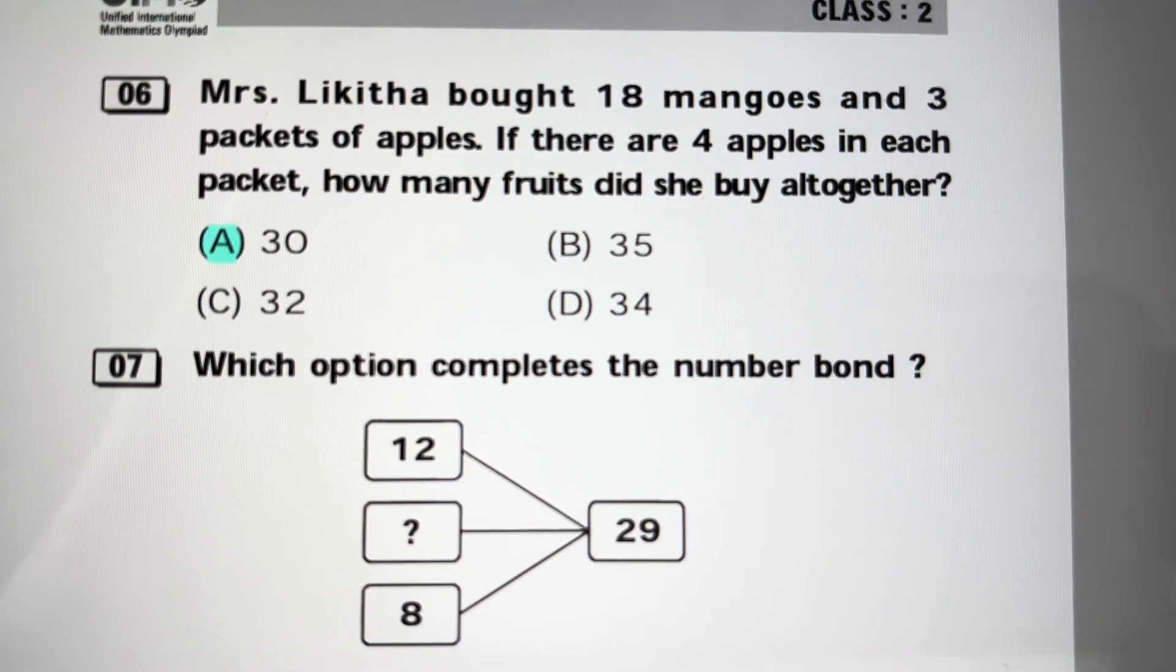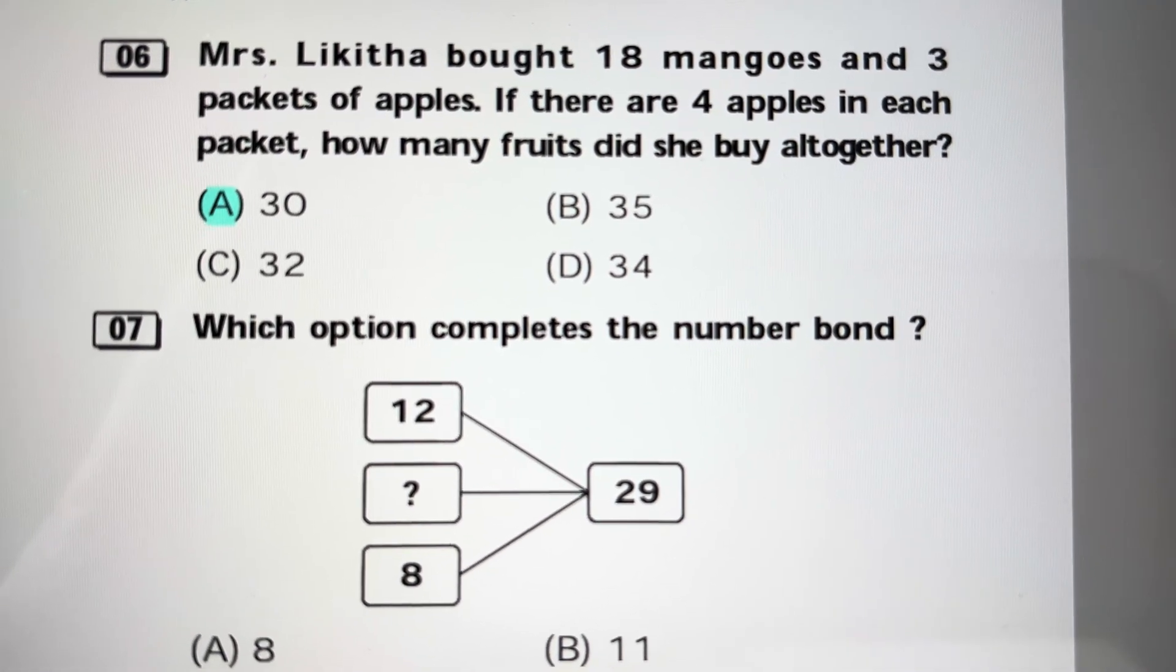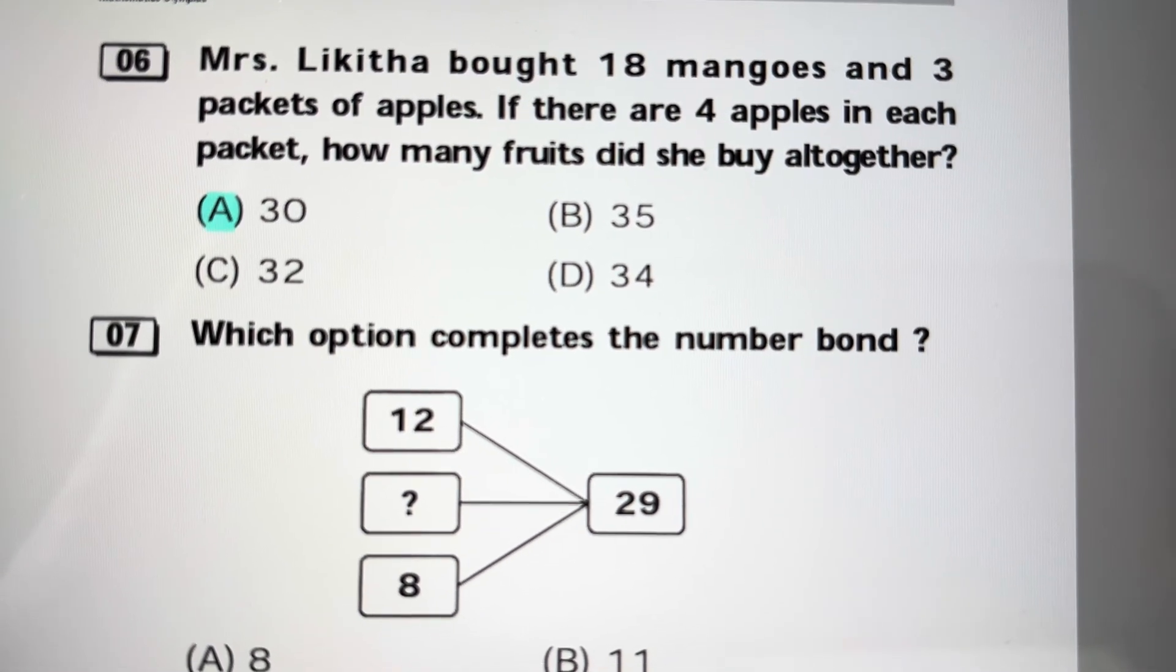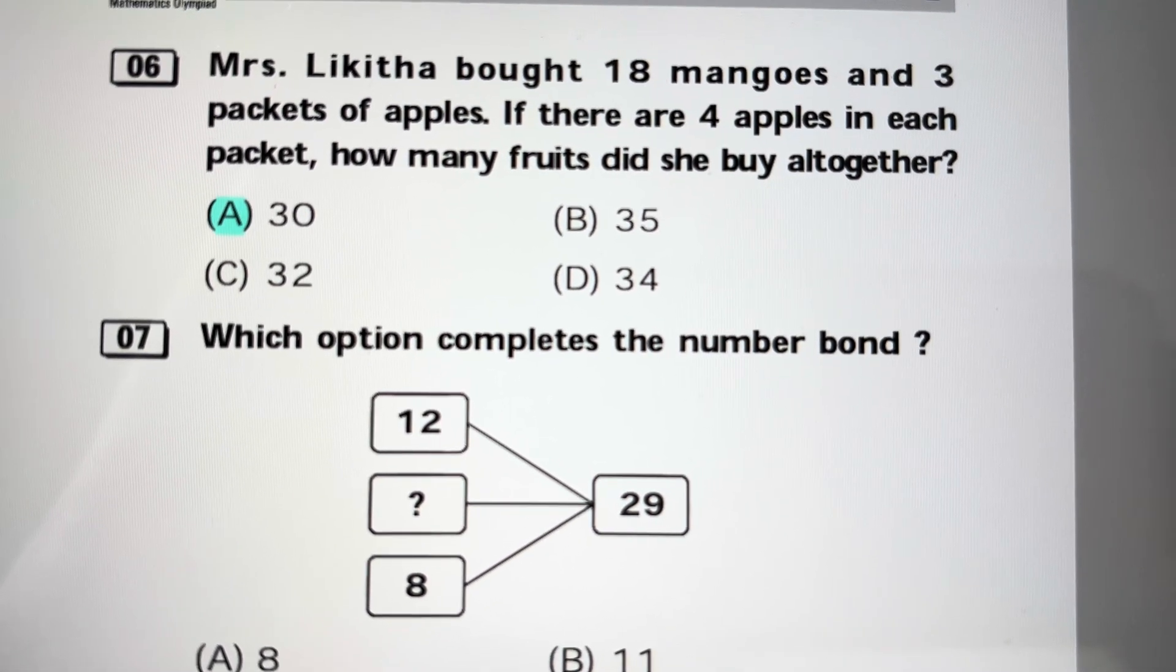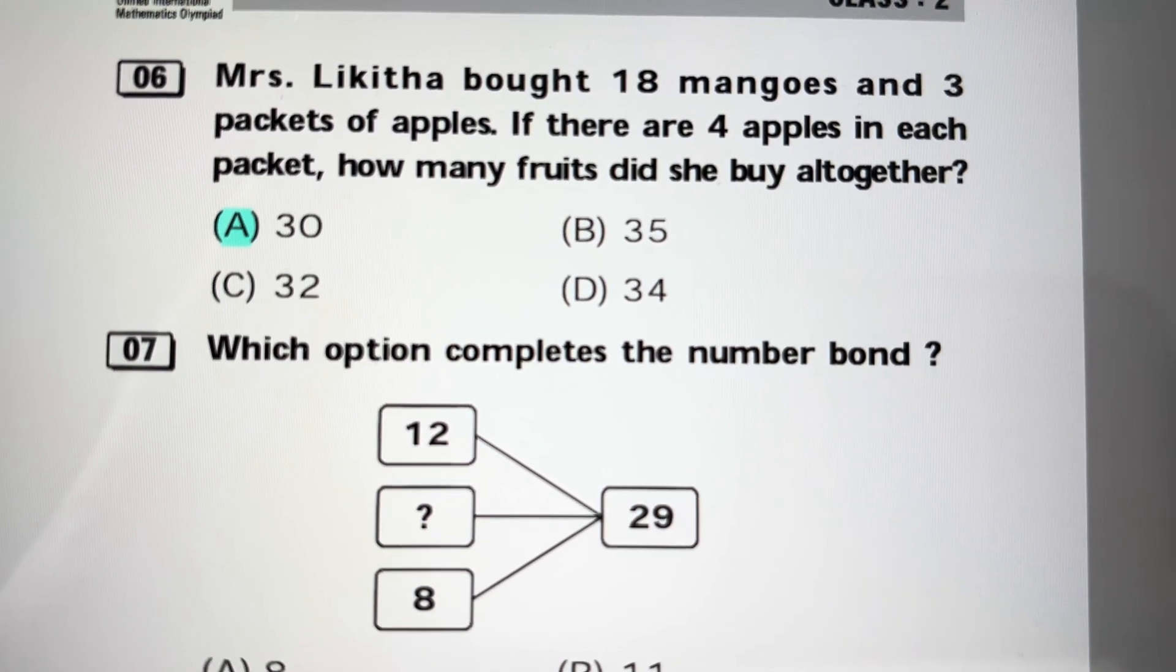Mrs. Lithica bought 18 mangoes and 3 packets of apples. If there are 4 apples in each packet, how many fruits did she buy altogether? Number of apples are 4 threes are 12, and mangoes 18. 18 plus 12 equals 30, so answer is 30.